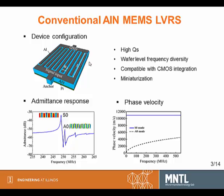Here we give a 3D simulation response of a typical aluminum nitride resonator. We can see the major resonance is the intended S0 mode. Around the S0 mode, we can see an A0 mode. In later slides, I will show this A0 spurious mode will cause large in-band ripples to the corresponding filters. On the right, we also show the phase velocity. We can see the S0 mode has a much higher phase velocity than the A0 mode.